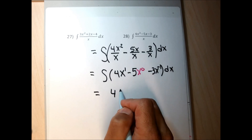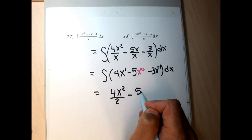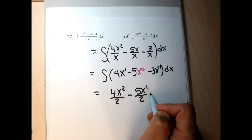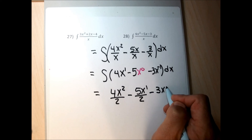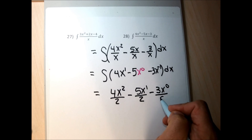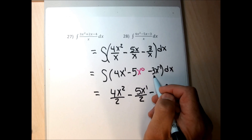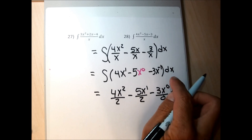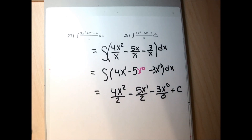For the first term, x had exponent 1; add 1 to get 2, divide by 2. Middle term, add 1 to exponent 0, divide by new exponent. Last term has x to the negative 1, and this is the case where the formula doesn't work — adding 1 to the exponent gives zero in the denominator, which is undefined. So I need one new rule to handle this integration.